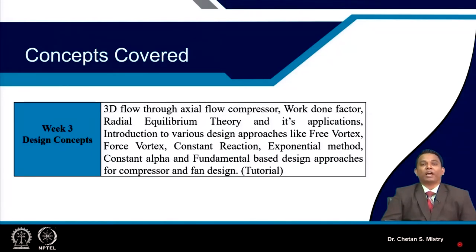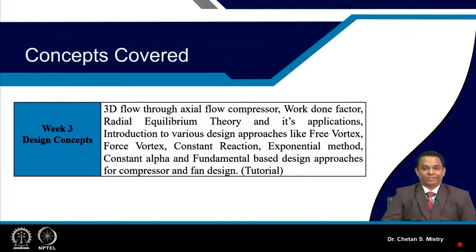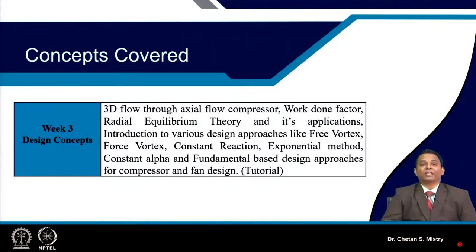We started discussing how the flow 3-dimensionality is happening within our passage. We realized that because of the adverse pressure gradient, we have shape change at the entry and exit of the stage or number of stages. In that case, we will be having our flow passage with a 3-dimensional shape — it will not be parallel wall, but will be inclined wall.